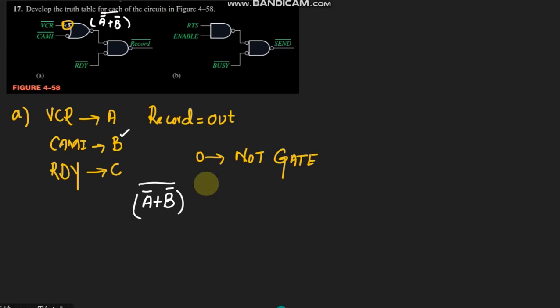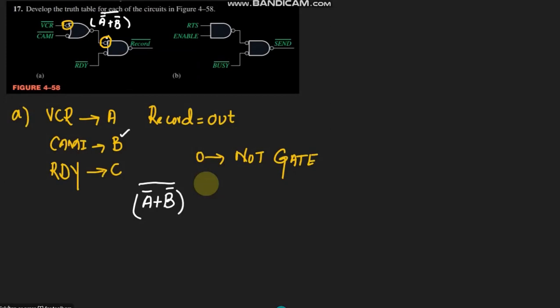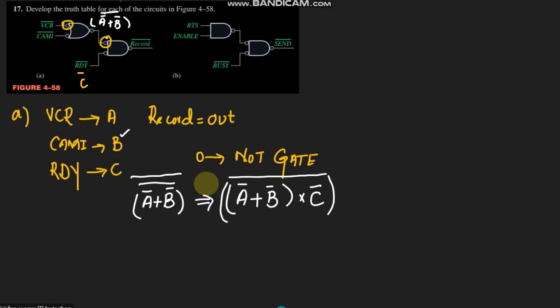This output is now applied at the next point. We can see that this is applied here, and RDY which is also 'c' is also given to this bubble, so it is also complemented — it will become c'. When this signal is applied here, it is again complemented and the complement of a complement is no complement, so we get a' + b'. This c' and (a' + b') are both applied to what is basically a NAND gate, so it will be multiplied with c', and at the end we get the whole complement because of the NAND operation.